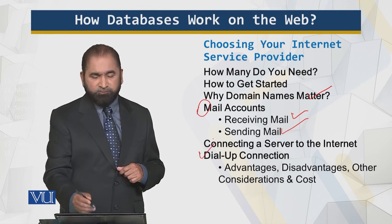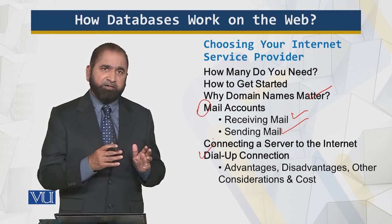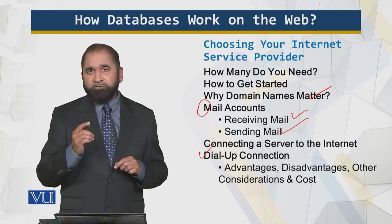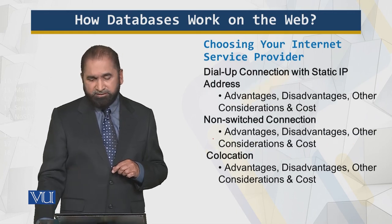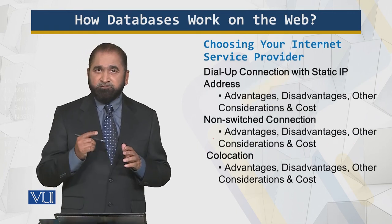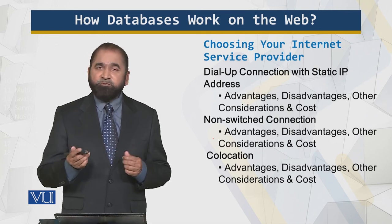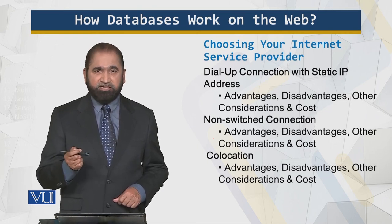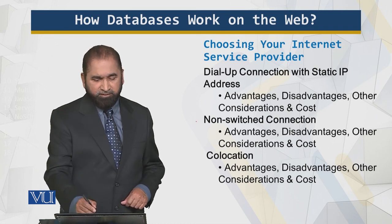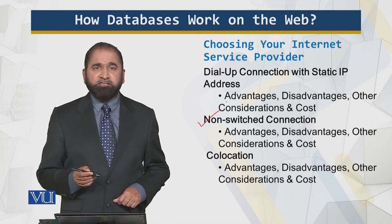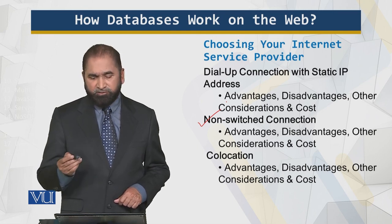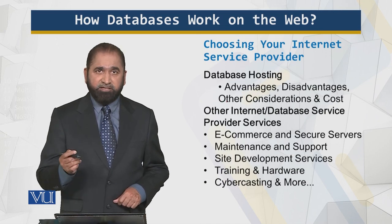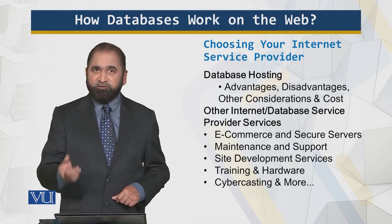There are different types of connections. A dial-up connection connects my web or database server to the ISP over a dial-up line, with a dynamic IP address. Then there is a dial-up connection with static IP, where the IP is fixed. With a dynamic IP, people have difficulty locating you; with static IP it doesn't change. Then there is a non-switched connection based on frame relay, ISDN, or leased line, and then co-location and database hosting. E-commerce and other services are also provided by the ISP.